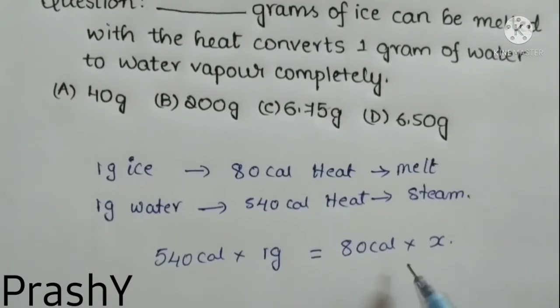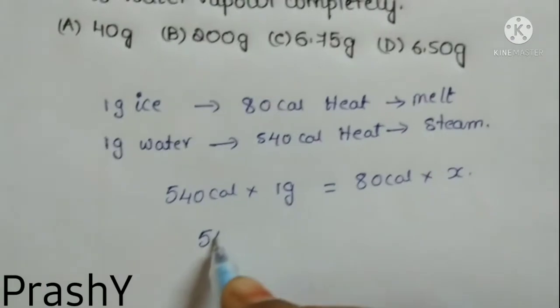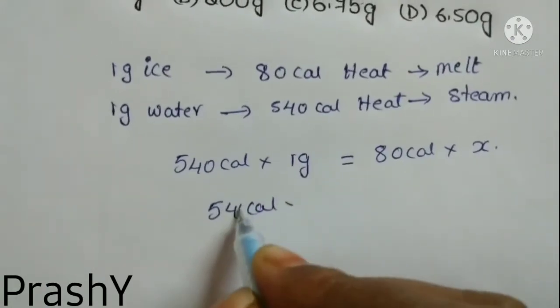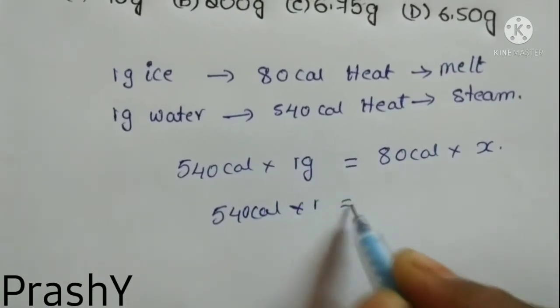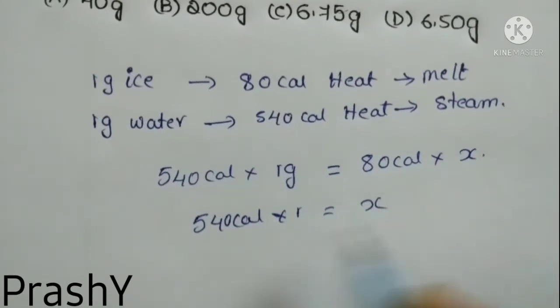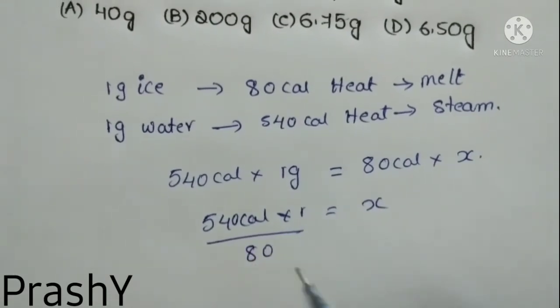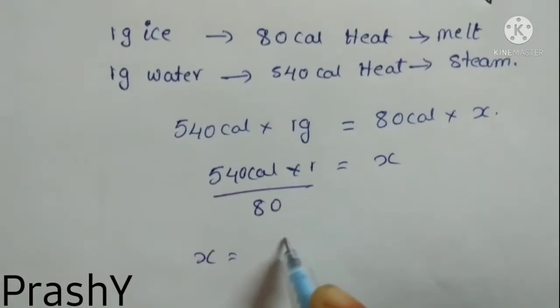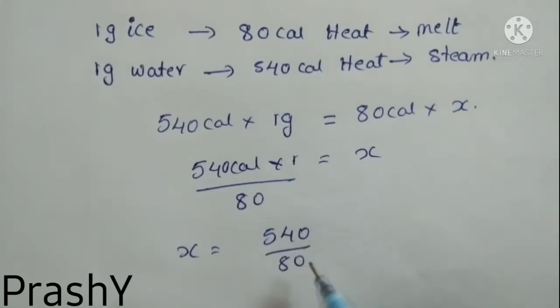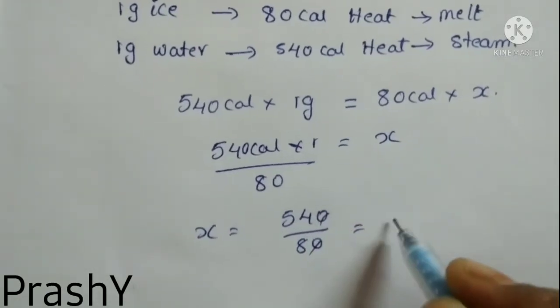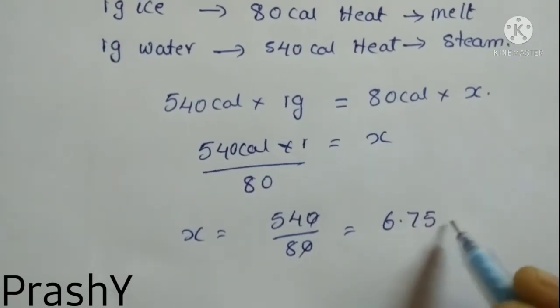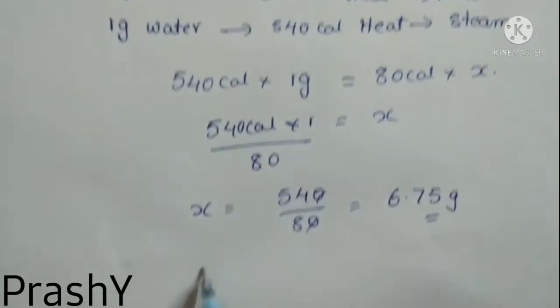So 540 times 1 is equal to X times 80. So we will get X is equal to 540 divided by 80. The zeros get cancelled, so on simplification I will get 6.75 grams.